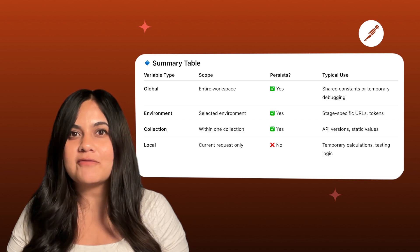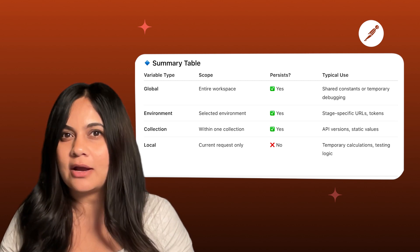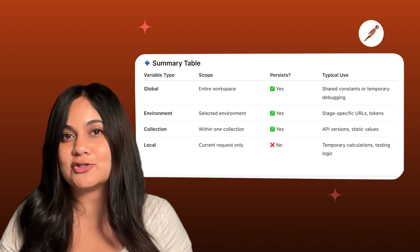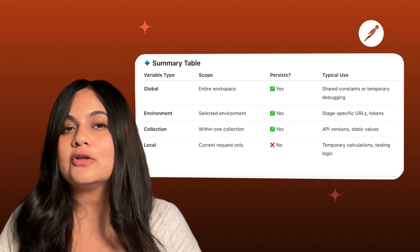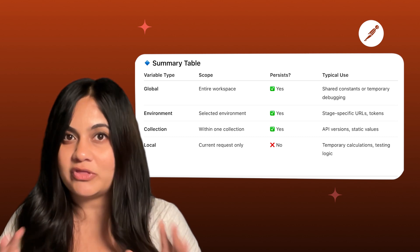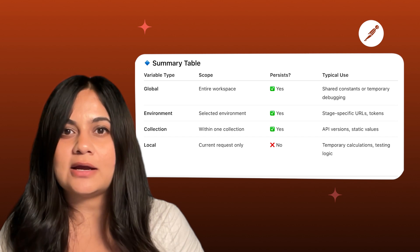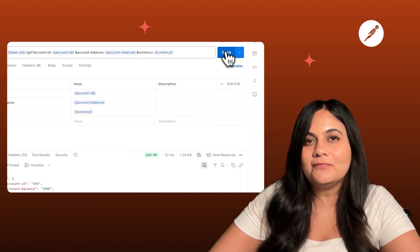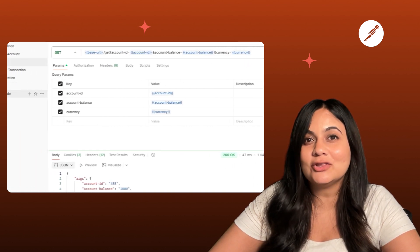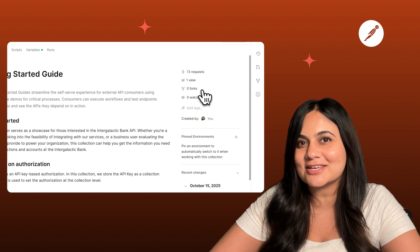Here are some basic rules of thumb. Use local variables for temporary values during execution. Use environment variables for context switching when working with different environments like staging, testing, or production. Use collection variables for constants shared across requests within your collection. And use global variables for workspace-wide data, but only when necessary. Now you know how to use global, environment, collection, and local variables within Postman to make your API workflows more flexible and secure.